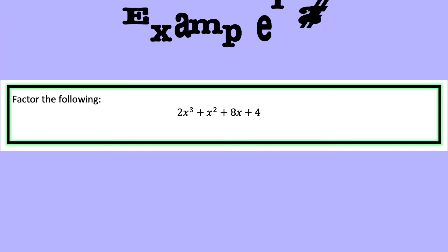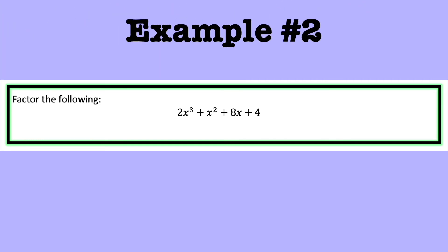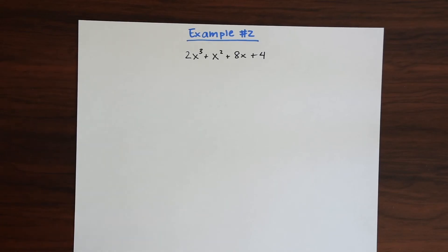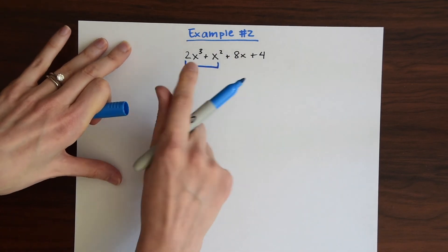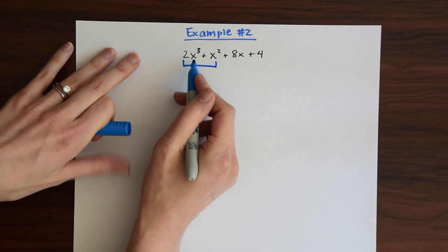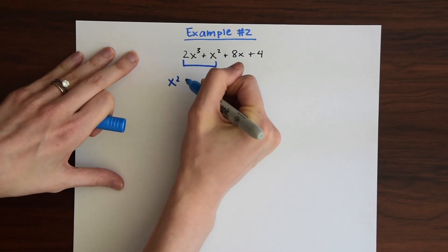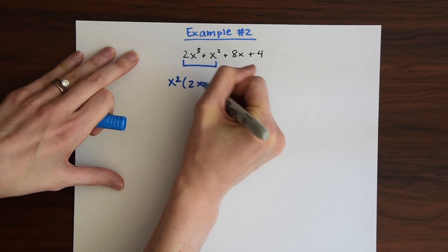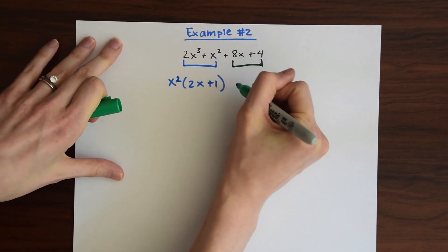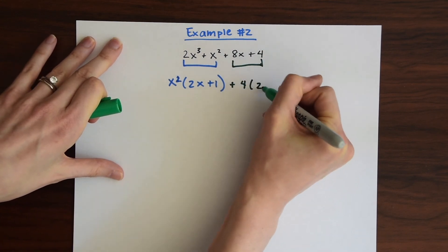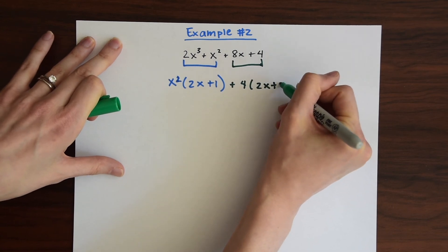For example number 2, we have a polynomial with four terms: 2x cubed plus x squared plus 8x plus 4. This might look a little more difficult, but actually this is easier because we can skip the whole product sum step and just start splitting this into two halves and taking the GCF. The GCF of the first section is x squared, and when we do that we're left with 2x plus 1. The GCF of the next section — we can take out a 4 — and we're left with 2x plus 1.